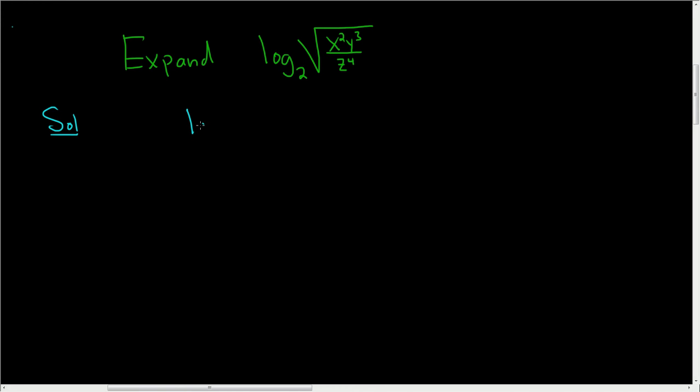So one way to do that is to write this as follows. This is the log base 2 of x squared y cubed over z to the fourth, and this whole thing is being raised to the one-half.